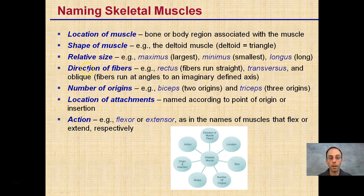The relative size can factor in — maximus meaning large, minimus meaning small, or longus meaning long. The direction of the fibers also plays a role: rectus refers to fibers that run straight, while transverse and oblique refer to fibers that run at angles. The number of origins matters too — biceps have two origins, triceps have three origins.